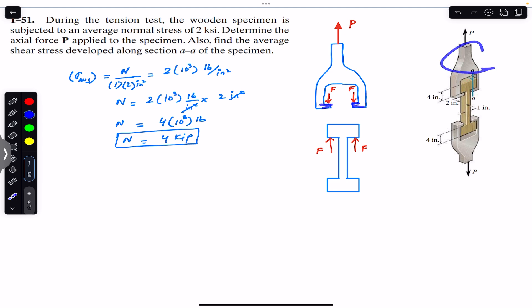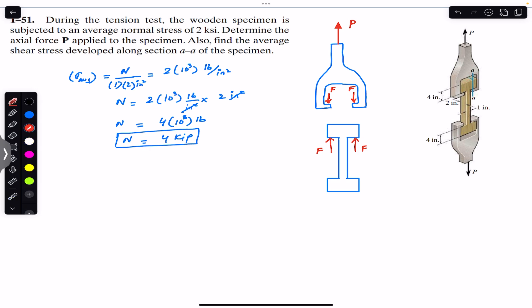Similarly, if we consider the lower part of the mechanism, the two legs apply forces on the specimen in the downward direction because the specimen is in tension. As a reaction, the specimen applies force on the legs in the upward direction, so we again have the same F forces acting on the lower part as well.